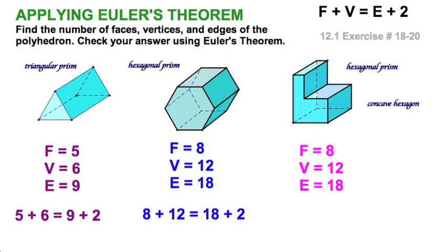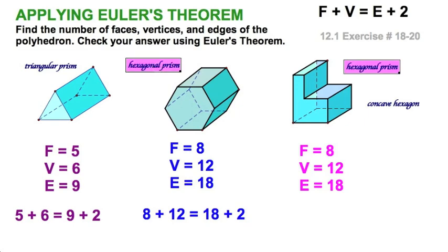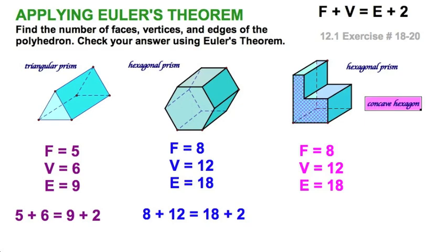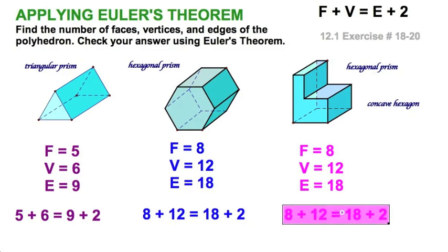The next figure is an L-shape projected into a prism. It's actually still a hexagonal prism — identical to the previous figure as far as Euler's theorem is concerned. It still has eight faces, 12 vertices, and 18 edges. The L-shape is simply a concave hexagon, but it retains the same properties of a hexagonal prism. That's exercise 20.